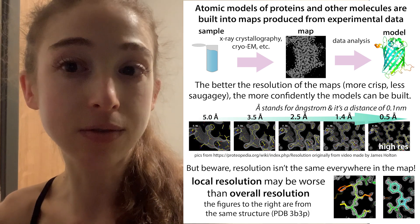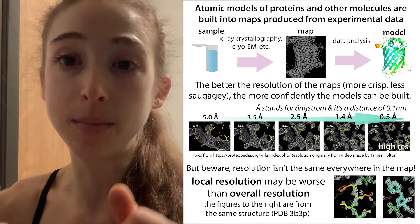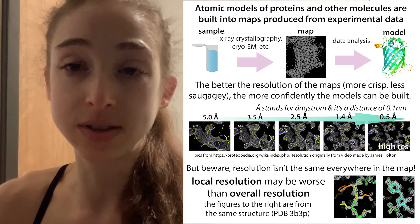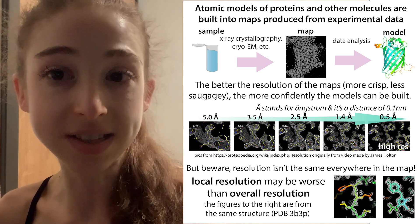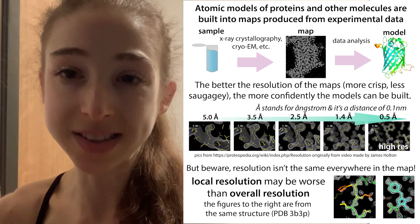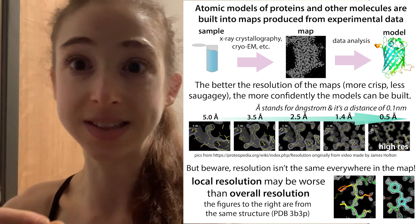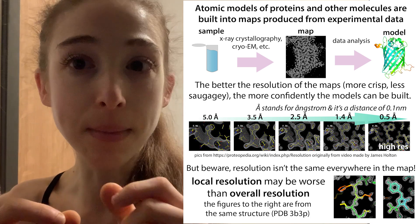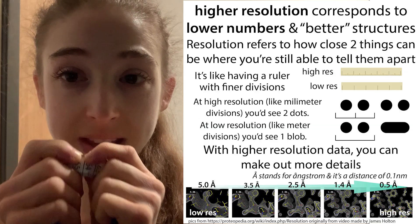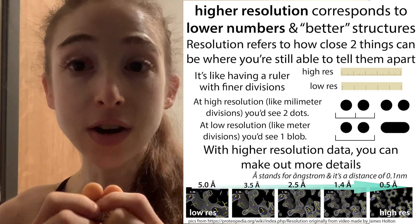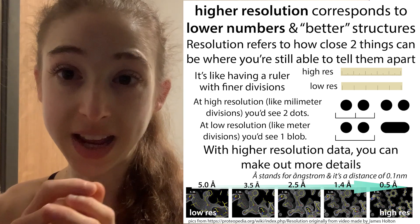Similarly, higher resolution data gives you a much crisper, focused map — like getting a street address versus being told it's somewhere in San Francisco. The higher the resolution, the finer the distance you can distinguish. Smaller values mean you can tell things are still separate even when they're close together, while at lower resolution — higher number values — those things start merging together.